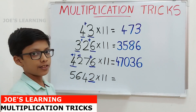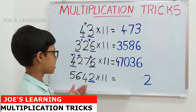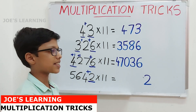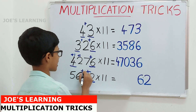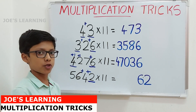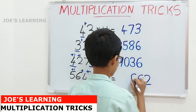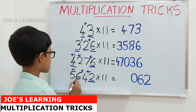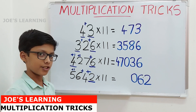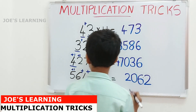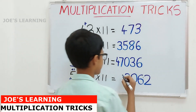Now let us look at 5642 × 11. The last digit is 2, so we write down 2. Next, we add 2 and 4, which equals 6. Then we add 4 and 6, which equals 10 — we carry 1 and write 0. Then we add 6 and 5, which equals 11, plus 1 carried equals 12 — we carry 1 and write 2. Finally, the first digit is 5, plus 1 carried equals 6, so we write 6.